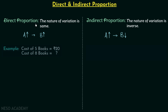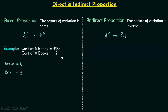Now we will take one example of direct proportion. We have five books costing 20 rupees and we need to find the cost of eight books. Let quantity A be the number of books and quantity B be the price. Initially quantity A is five, then it increases to eight. When you increase the number of books, the price also increases — it will be more for eight books than five books. So A increasing means B is also increasing, and therefore we have direct proportion between books and price.